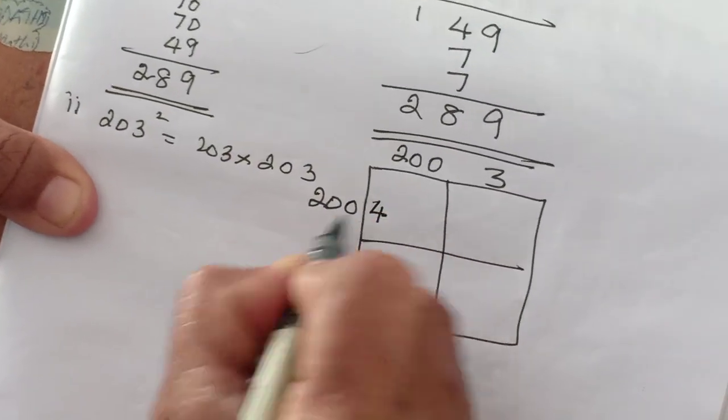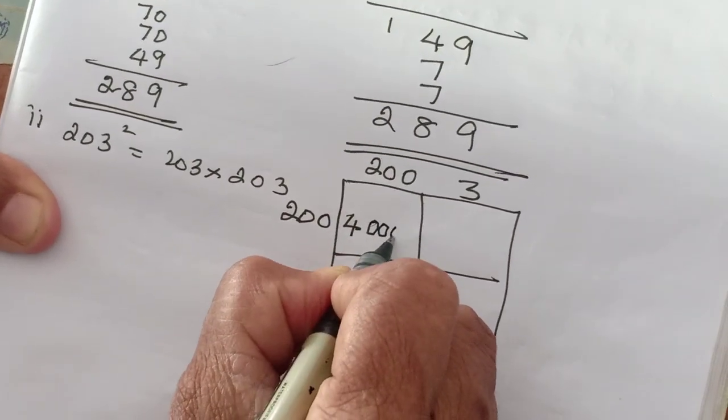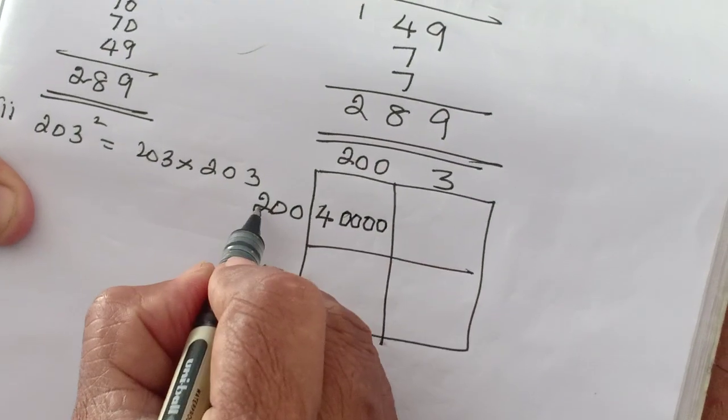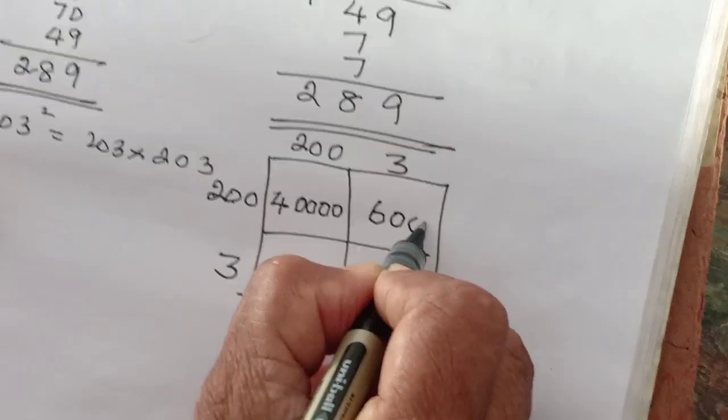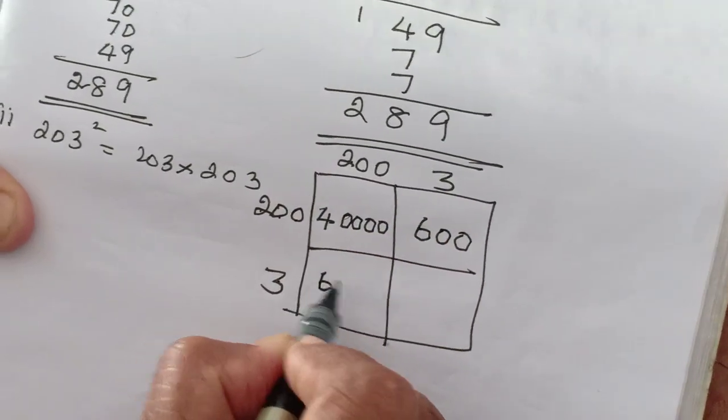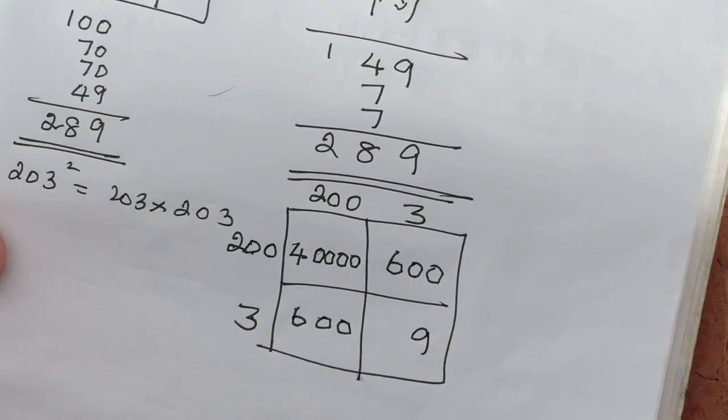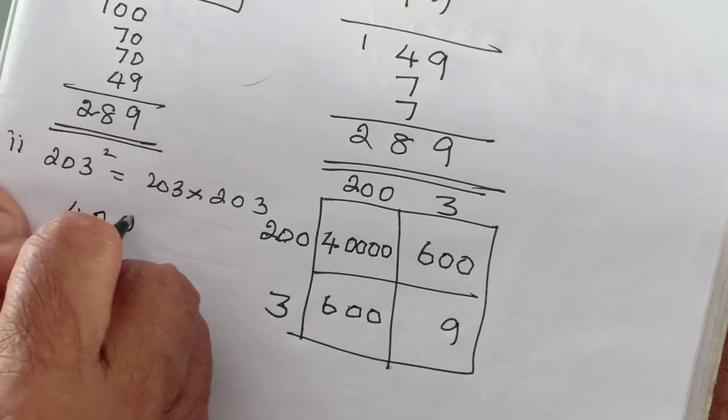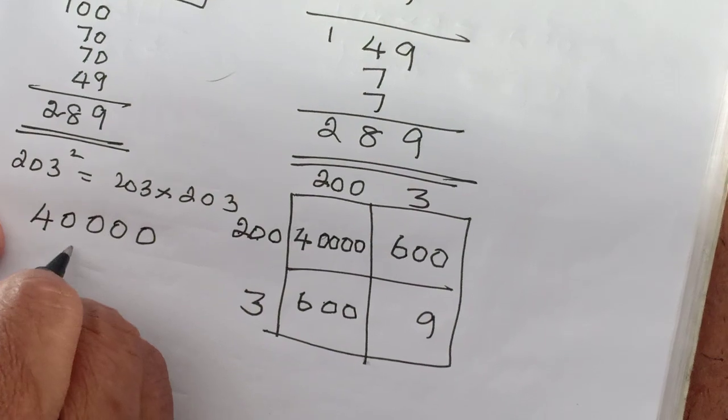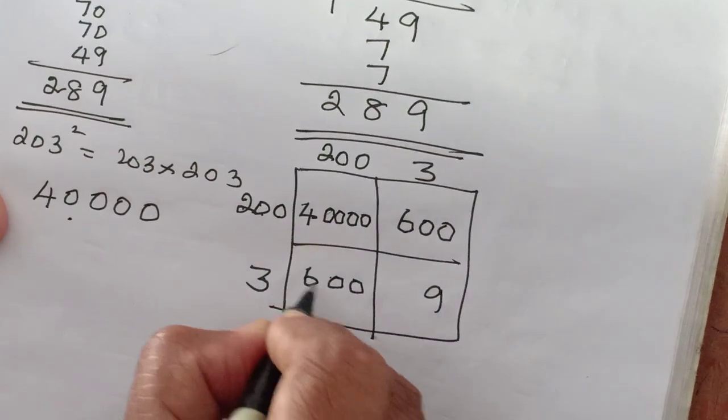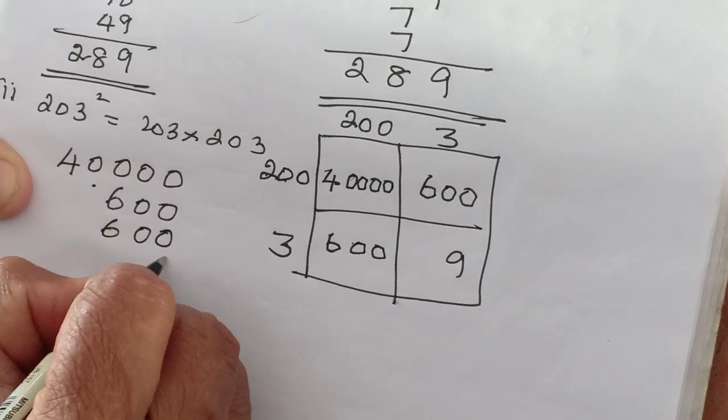2 times 2 is 4. How many 0s? Here 2 0s. Here 2 times 3 is 6, how many 0s? 2 0s. 3 times 2 is 6, how many 0s? 2 0s. 3 times 3 is 9. So just you add it. 40,600 plus 600, 1,200. If you want to write, you write it directly. 1,200 also. You can add 600 plus 600. Otherwise you can write directly like this also.